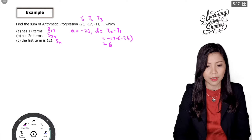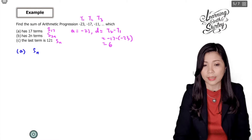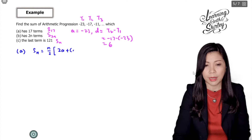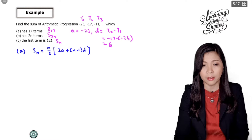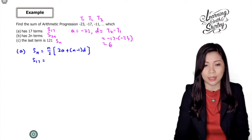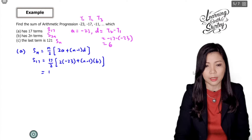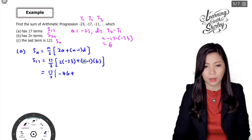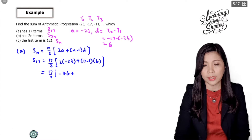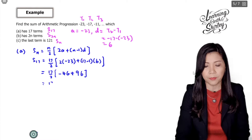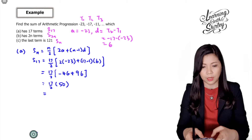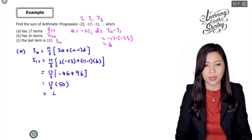For (a), use the Sn formula: Sn equals n over 2 times (2a plus (n minus 1) d). To find S17, substitute n equals 17: 17 over 2 times (2 times negative 23 plus (17 minus 1) times 6). That gives 17 over 2 times (negative 46 plus 96), which is 17 over 2 times 50. Using the calculator, 50 times 17 over 2 gives 425. So the answer is 425.